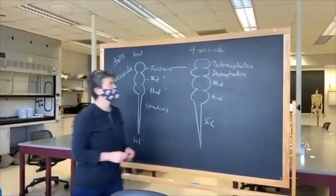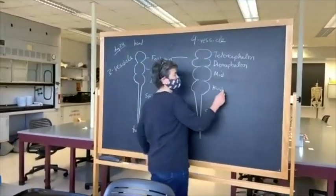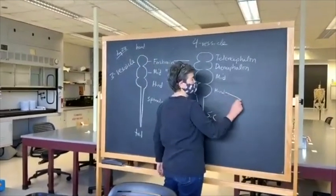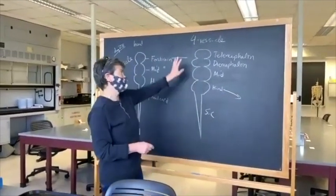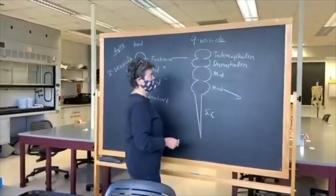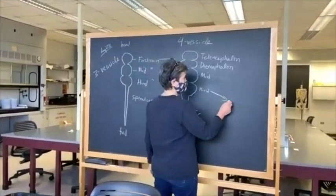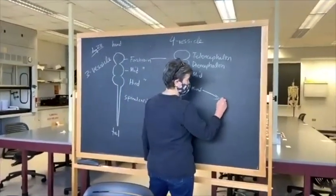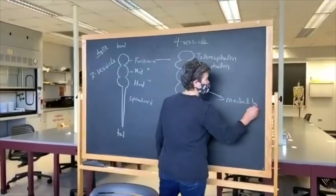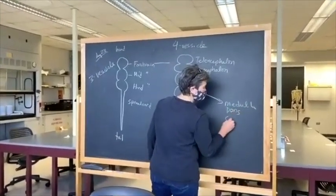Let's see what all these different parts become in the adult. This is now about a 30-some-day-old embryo in the human. The hindbrain is going to become the medulla, the pons, and the cerebellum. And the midbrain is going to become the midbrain.